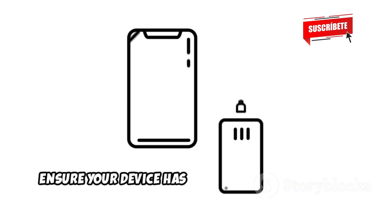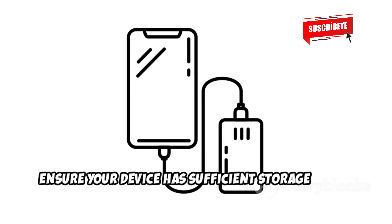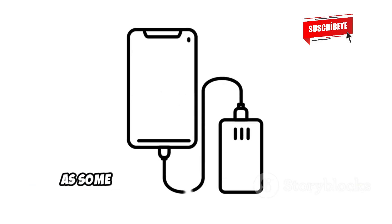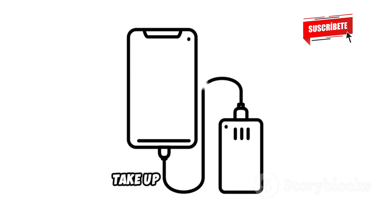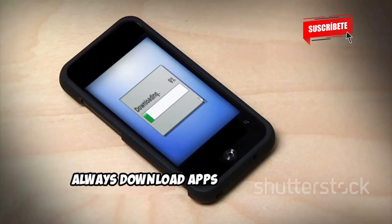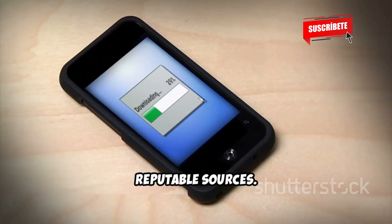Setting up your Android device for ethical hacking involves a few key considerations. Ensure your device has sufficient storage space, as some tools and their dependencies can take up a fair bit of room. Always download apps and tools from reputable sources.